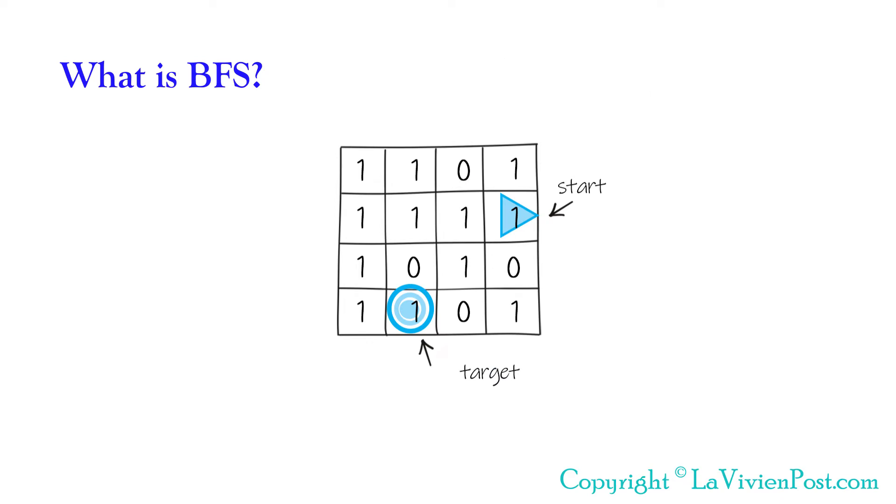BFS starts from the source node and traverses the graph level by level, meaning visit all the neighbors nodes prior to moving on to the next level nodes. Once the key or the destination is reached, we can stop.